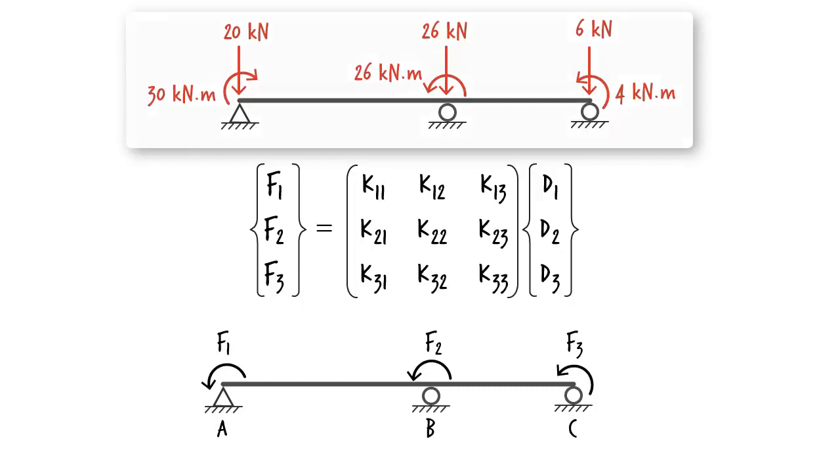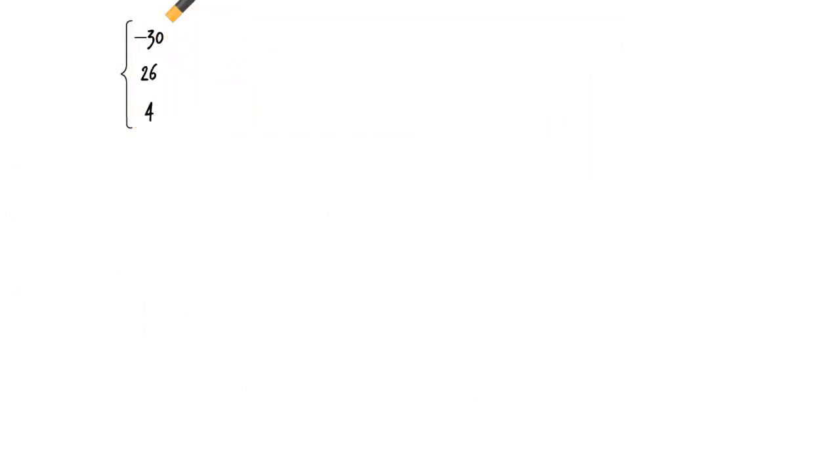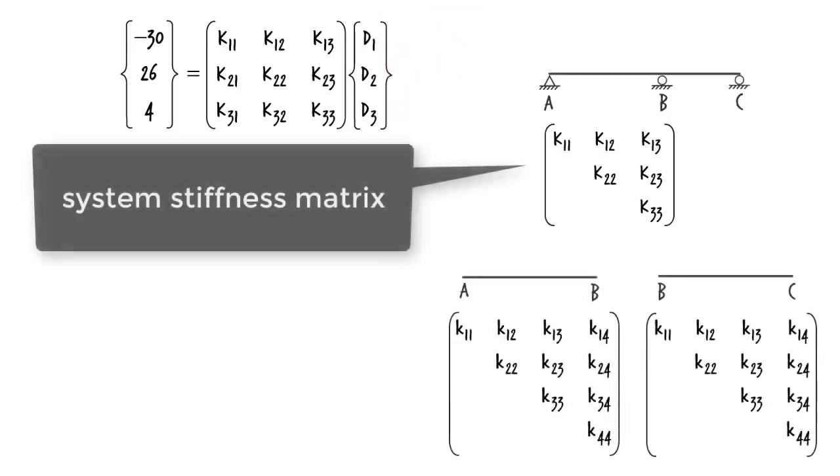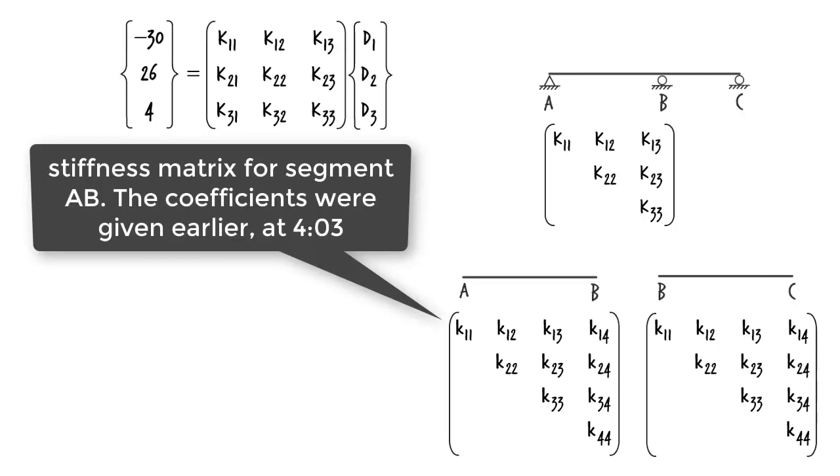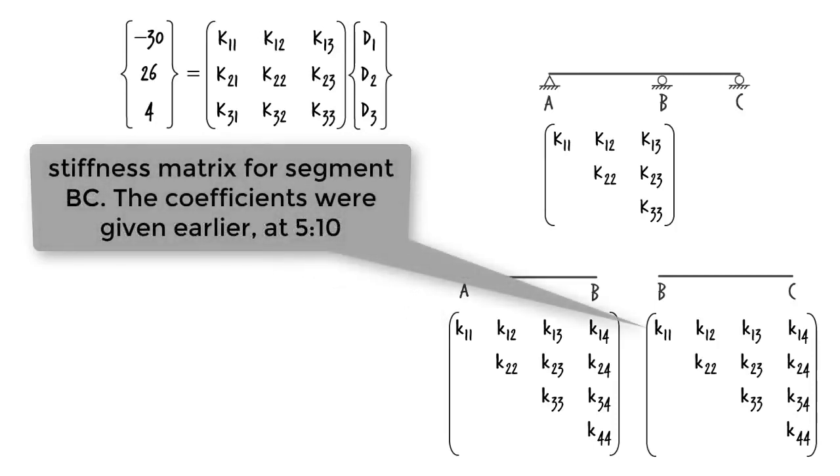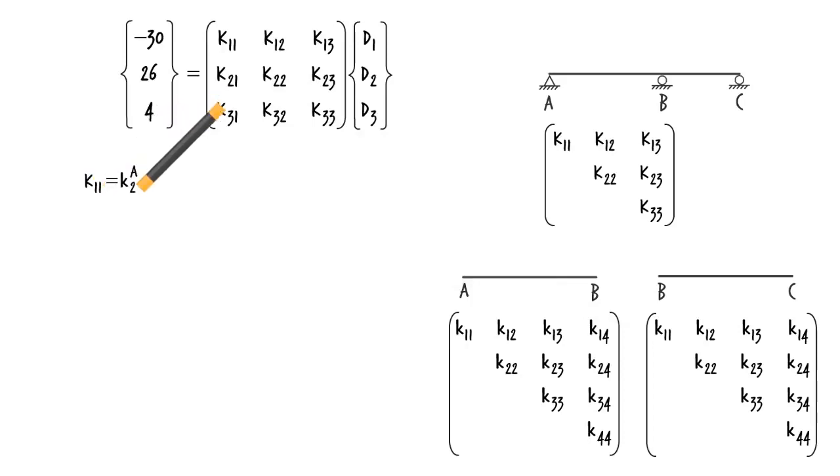As for the coefficients of the system stiffness matrix, they can be easily computed using the elements of the member stiffness matrices as follows. K11 of the system equals K22 of member AB. Thus, it equals 2EI over 3. K12 equals K24 of AB, or EI over 3. K13 equals 0.